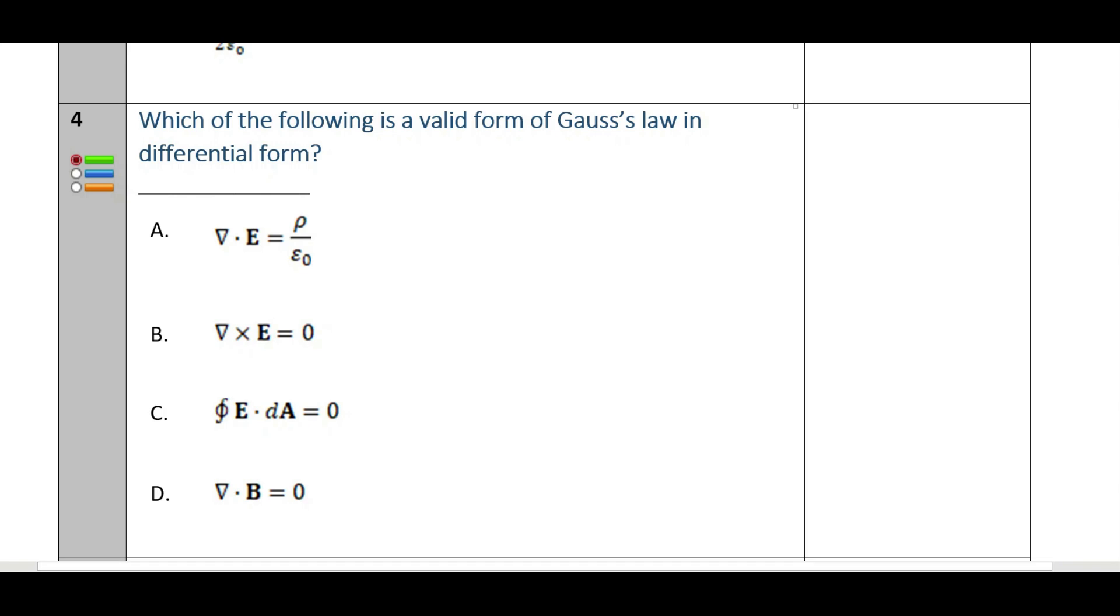Which of the following is a valid form of Gauss's law in differential form? The correct answer is option A. Del dot E is equal to rho by epsilon_0. Then del dot D is equal to rho. Then D is equal to epsilon_0 times E. There should be a normal component and a tangential component, along with the four Maxwell equations.